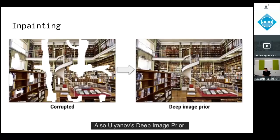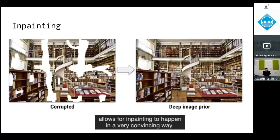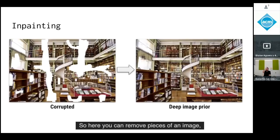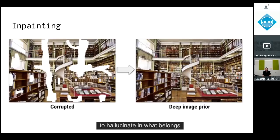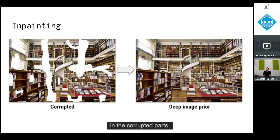Ulyanov's deep image prior, more recent work, allows inpainting to happen in a very convincing way. You can remove pieces of an image, and this technique uses priors from unsupervised learning on very large image corpora to hallucinate what belongs in the corrupted parts.